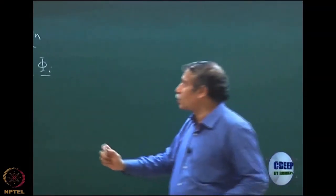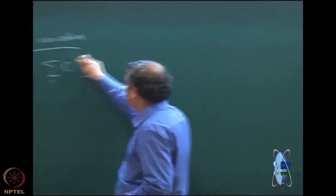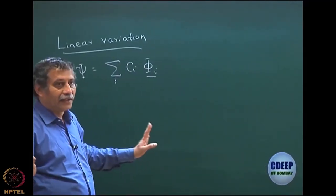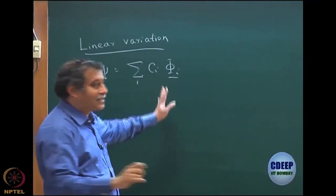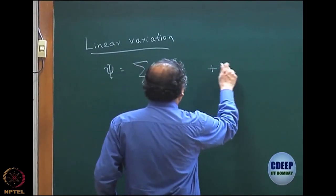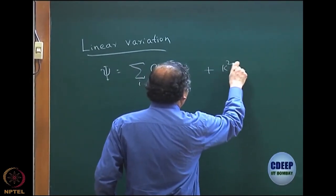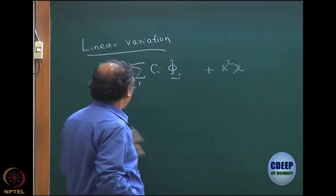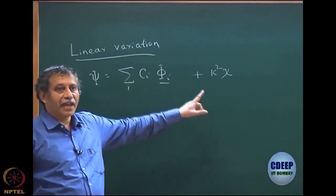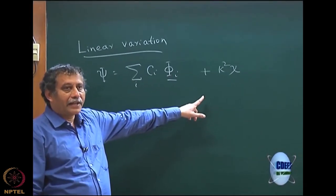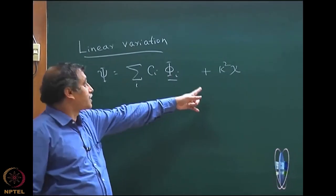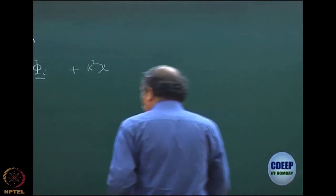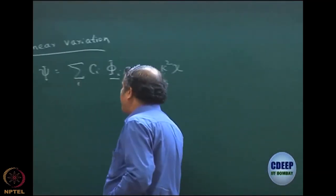Linear variation means the parameters which you are varying appear linearly in the expansion of the function. So, the Cs are linear. If there is a C squared or one term which is C squared, it is no longer linear. If I had added one more term, say k squared times some other chi — another known function — this would no longer be linear variation because k is an unknown parameter appearing as a quadratic term. So what we are talking about is only for linear variation.